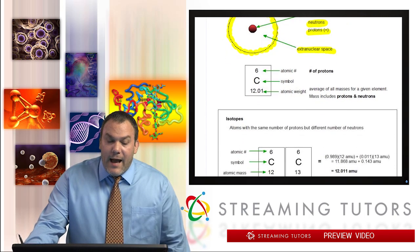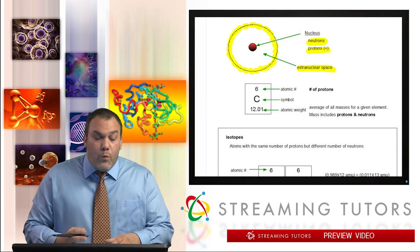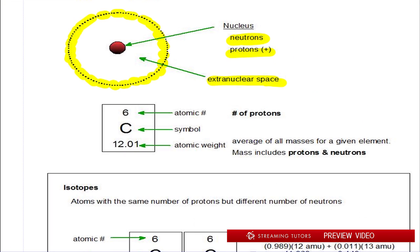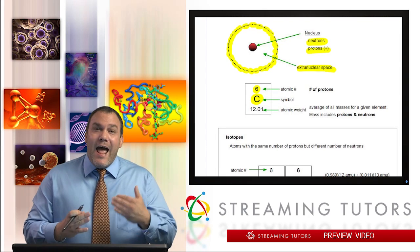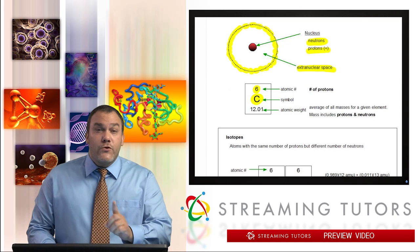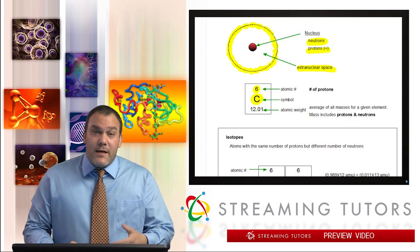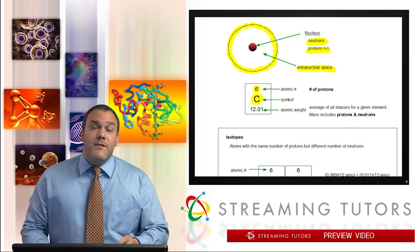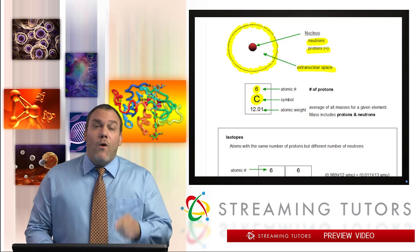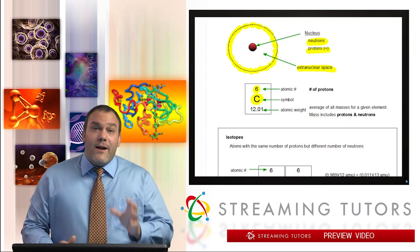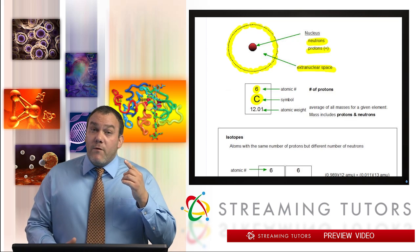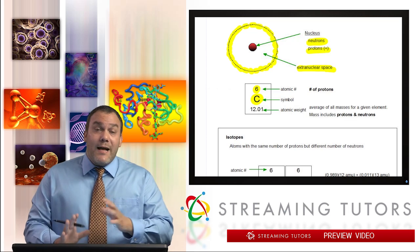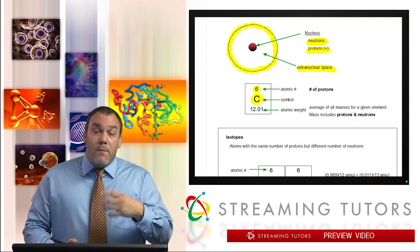When you look at an element on the periodic table, we have three things to consider. The first is the actual symbol — in this case carbon. Above it is the atomic number. The atomic number tells us how many protons this atom has, not neutrons. Neutrons vary; it could be the same type of atom but with a different number of neutrons. Protons are the signature that makes this atom carbon — if it's six protons, it's carbon. All atoms with six protons are carbon, but the number of neutrons can change — it could be six or seven.